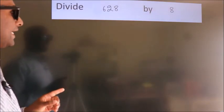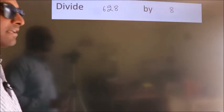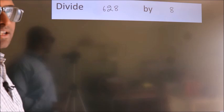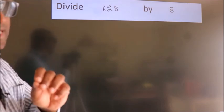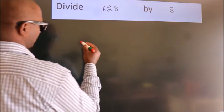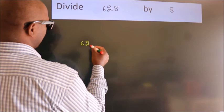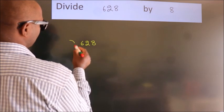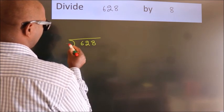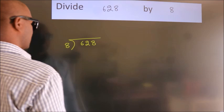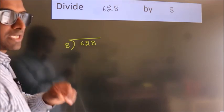Divide 628 by 8. To do this division, we should frame it in this way: 628 here, 8 here. This is your step 1.